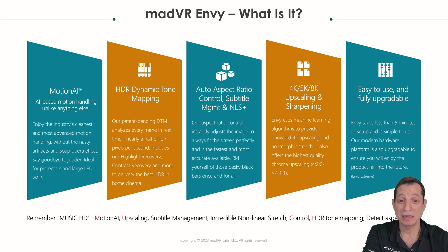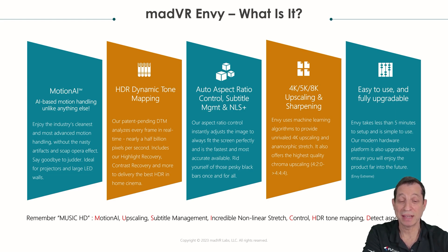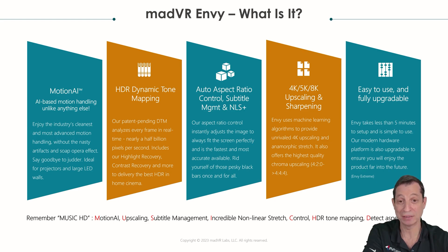The H in HD stands for HDR dynamic tone mapping — we'll get into that in just a second. And the D stands for detecting aspect ratios, for instantly managing aspect ratios and being able to change back and forth without having to use lens memory or manually adjusting any lens.